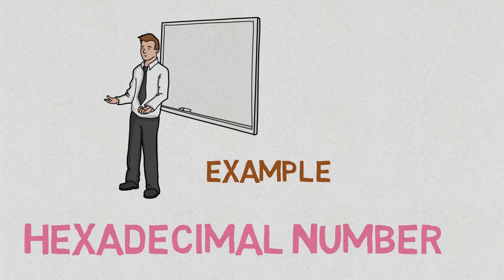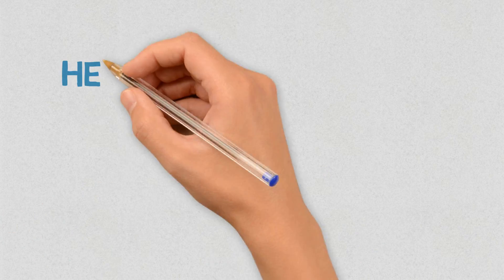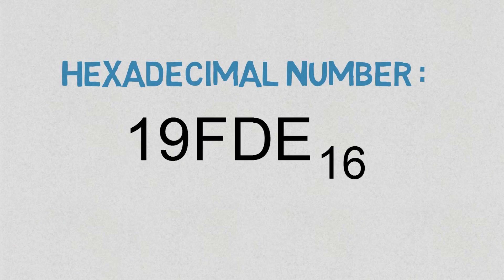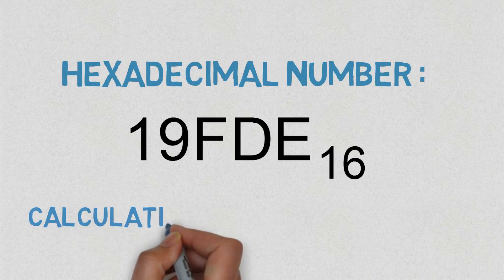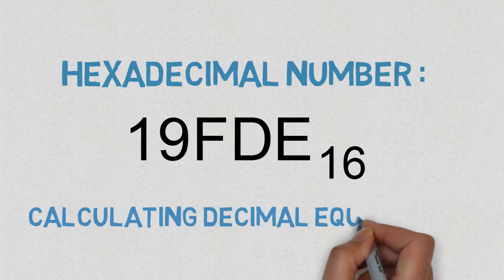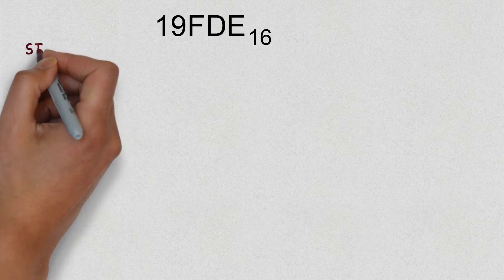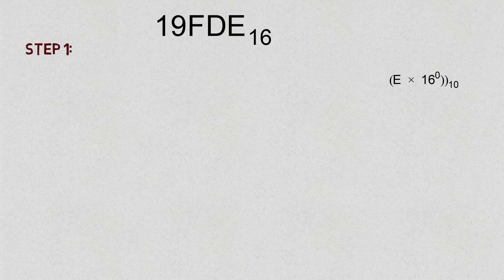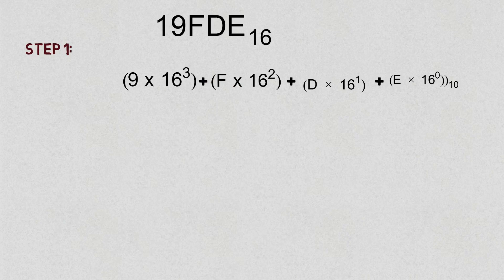The example number to understand the hexadecimal number system is 19FDE base 16. Just as we did with binary and octal, we are going to convert this hexadecimal number into its decimal equivalent. From the rightmost digit: E×16⁰, D×16¹, F×16², 9×16³, and 1×16⁴.